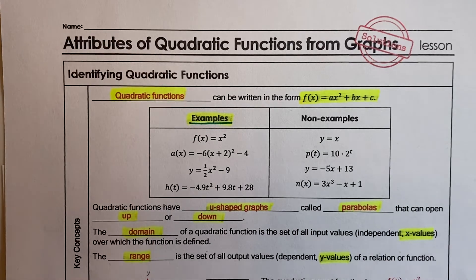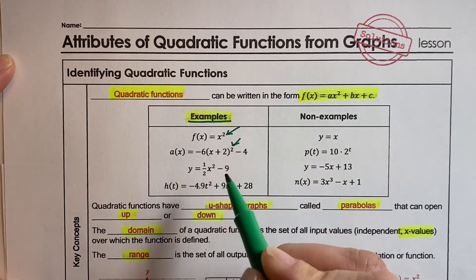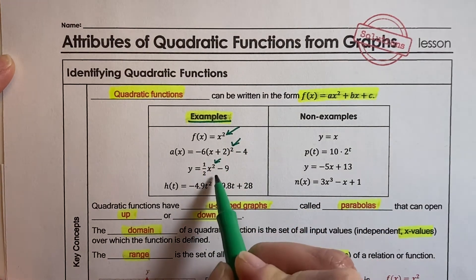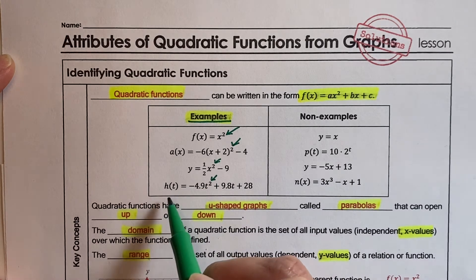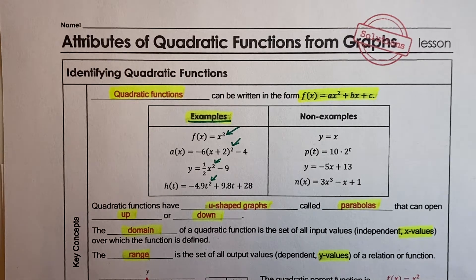What you're going to notice in all of the equations is you're just looking for x to be squared, or the variable. Sometimes you're going to use an application with a different function notation, such as h of t equals negative 4.9 t squared plus 9.8 t plus 28. So, as long as x is squared, it is a quadratic function.